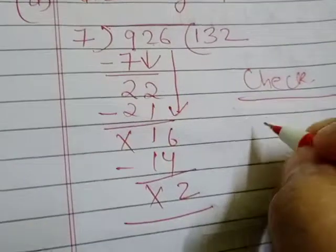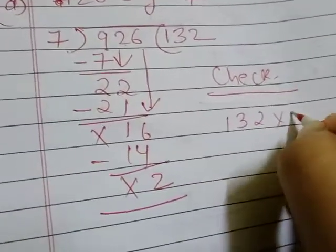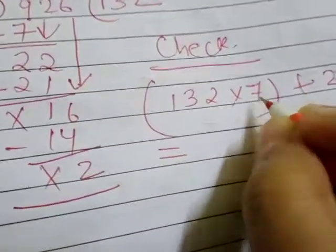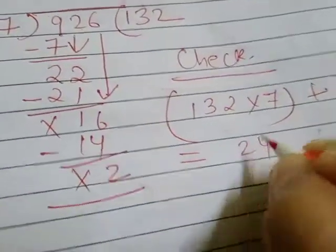For checking, we will write 132 into 7 plus 2. Now, how to check? 7 twos are 14, 1 carry 21 plus 1, 22.